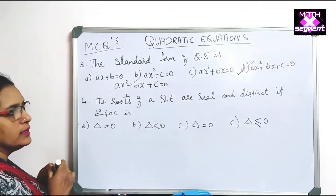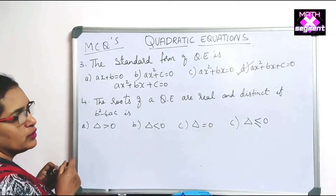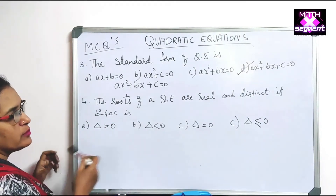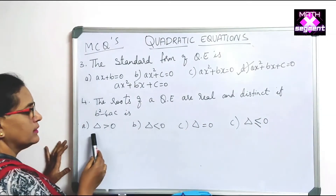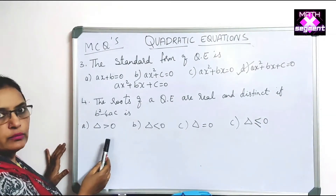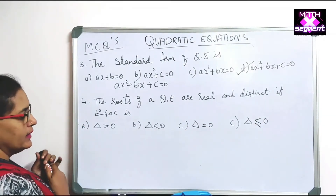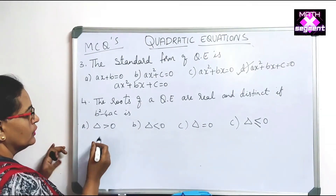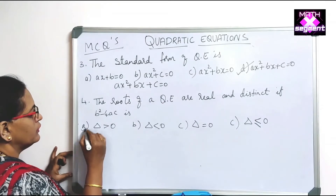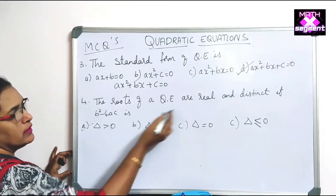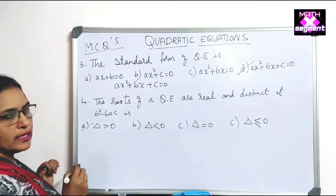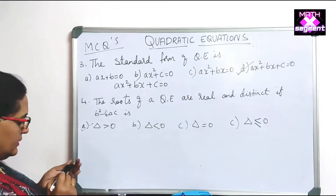MCQ: The roots of a quadratic equation are real and distinct if b² − 4ac is — ? Under the nature of roots, if the roots are real and distinct, the delta value is greater than 0. So the answer is Δ > 0.